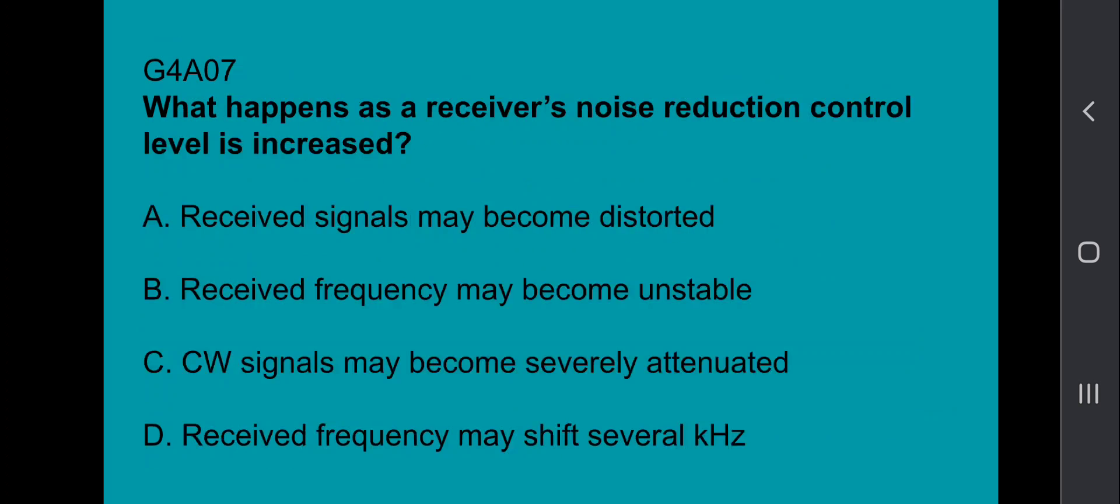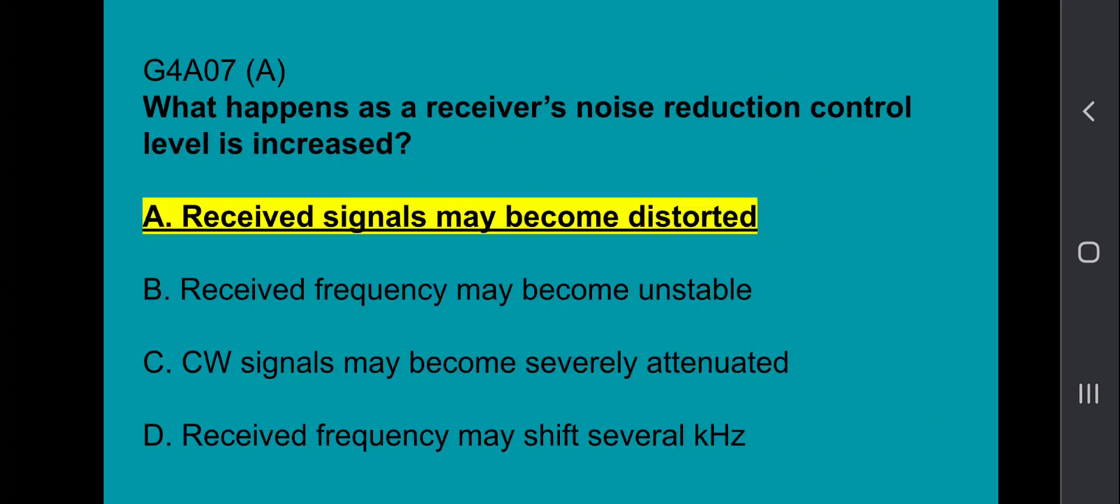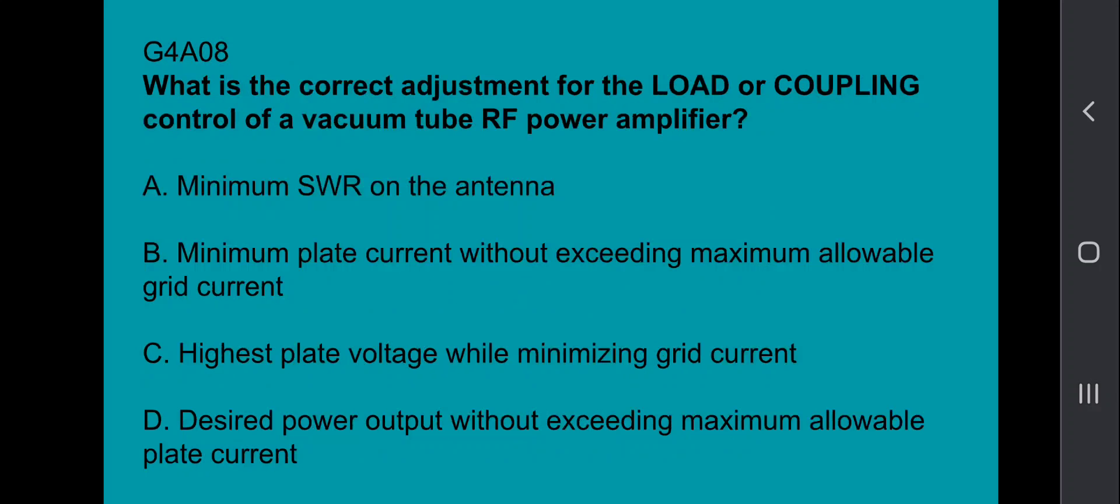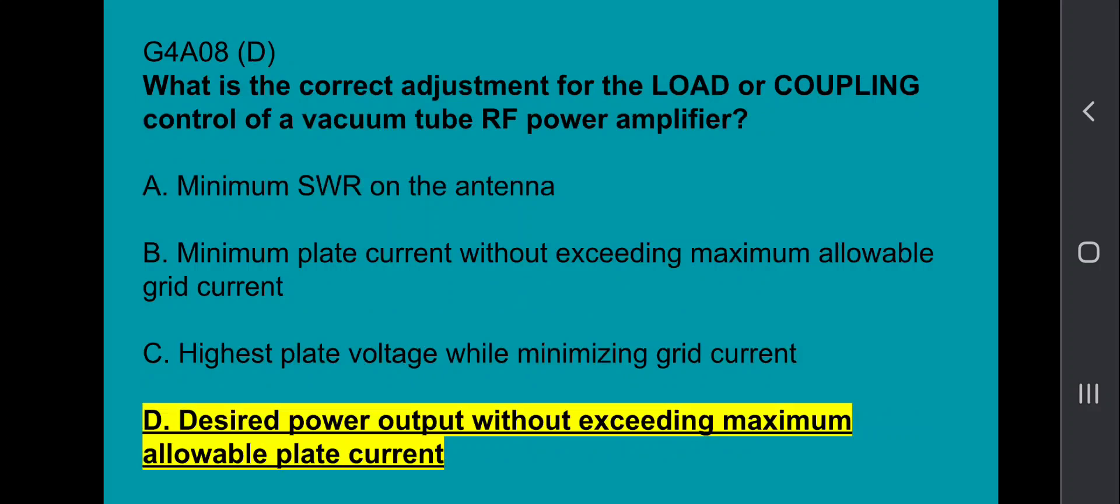G4A07, what happens as the receiver's noise reduction control level is increased? Received signals may become distorted. G4A08, what is the correct adjustment for the load or coupling control of a vacuum tube RF power amplifier? Desired power output without exceeding maximum allowable plate current.